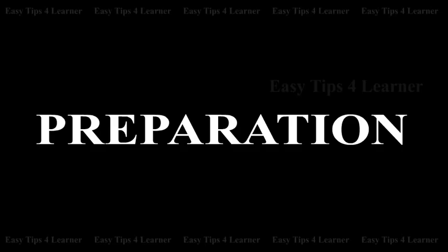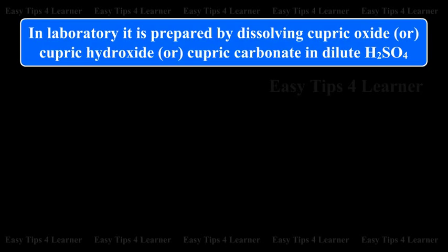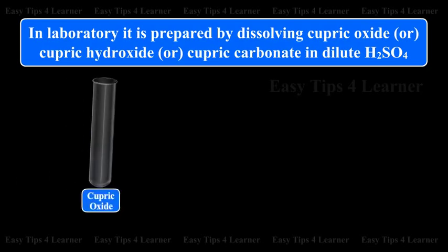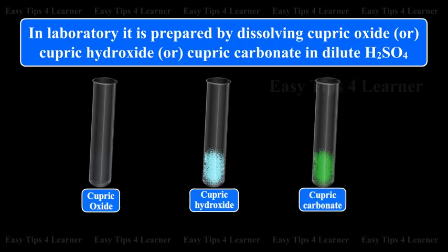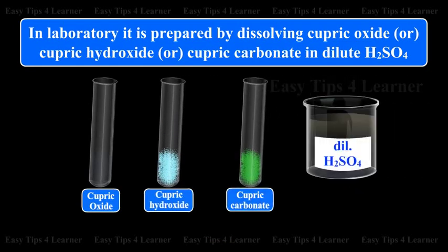Preparation: In the laboratory, it is prepared by dissolving cupric oxide, cupric hydroxide, or cupric carbonate in dilute sulfuric acid.